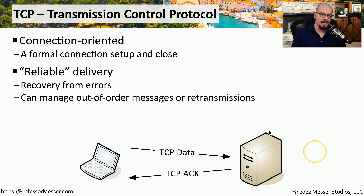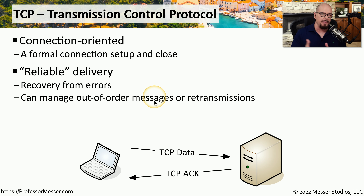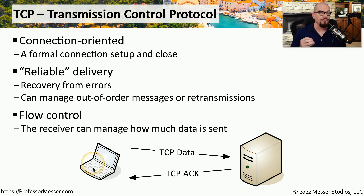This allows us a number of different features behind the scenes. One of the most important is that TCP can reorder messages that may have been received out of order, which sometimes can happen on networks that have multiple links to a single location. TCP can also manage a retransmission process so that if any data is not received by the destination, that information can be resent from the source. TCP also has a flow control mechanism so that if a device feels it's receiving information too quickly, it can tell the other side to slow down.